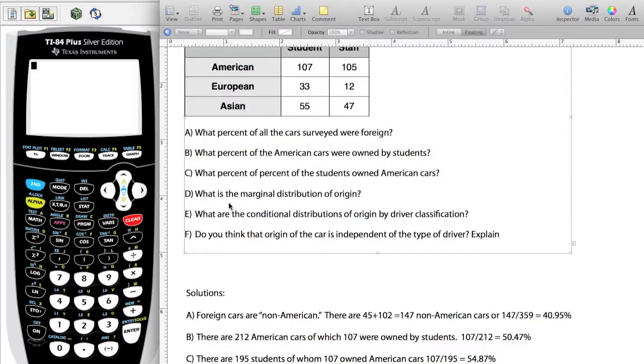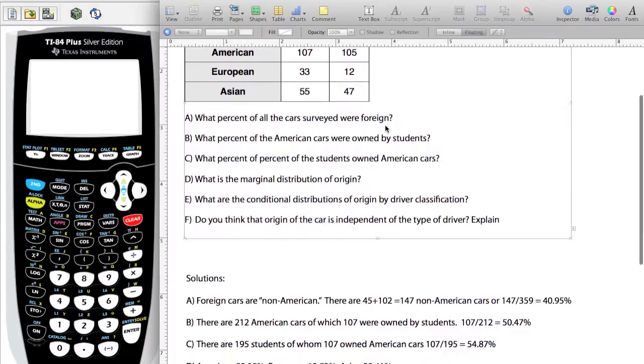Now we get to a very general question. What is the marginal distribution of origin? That really wants to know, out of the totals, just marginal distribution. So I want to know these totals. We do the total of the Americans out of the total number of cars, then European total out of the total, the Asian total out of the cars.